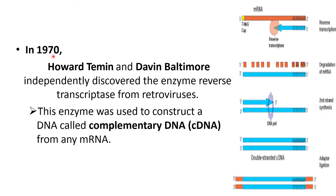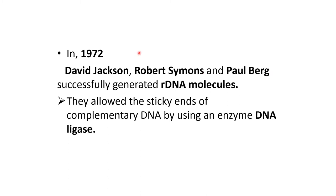Also in 1970, Howard Temin and David Baltimore independently discovered the enzyme reverse transcriptase from retroviruses. This enzyme was used to construct a DNA called complementary DNA, also represented as cDNA, from mRNA.